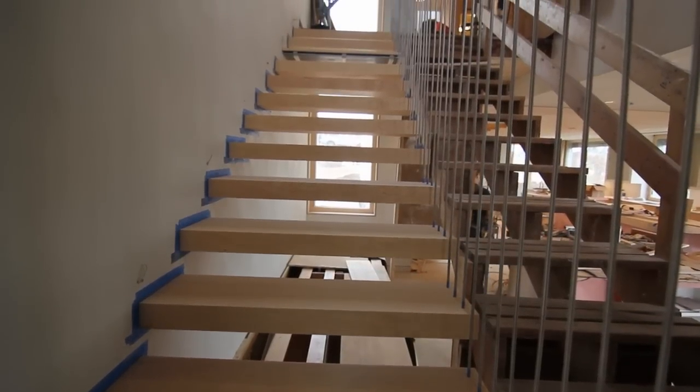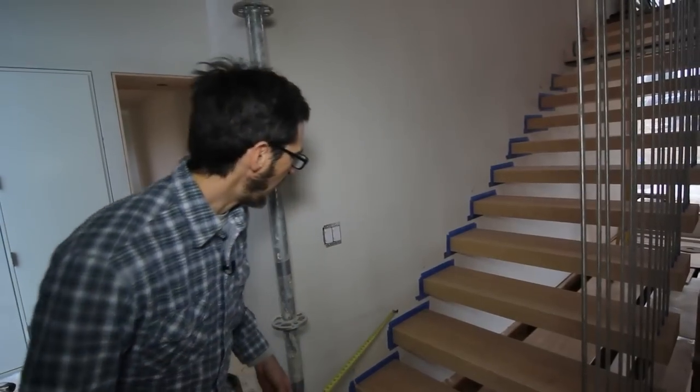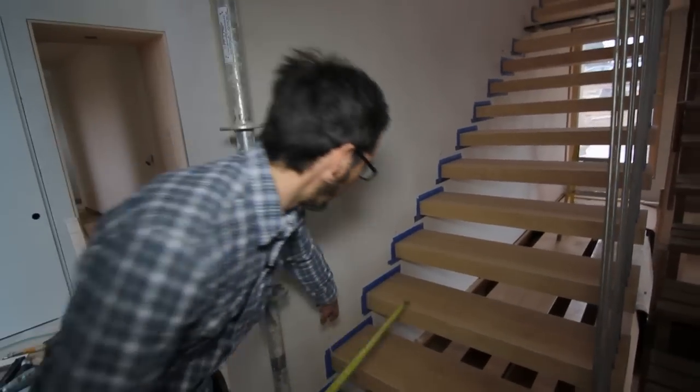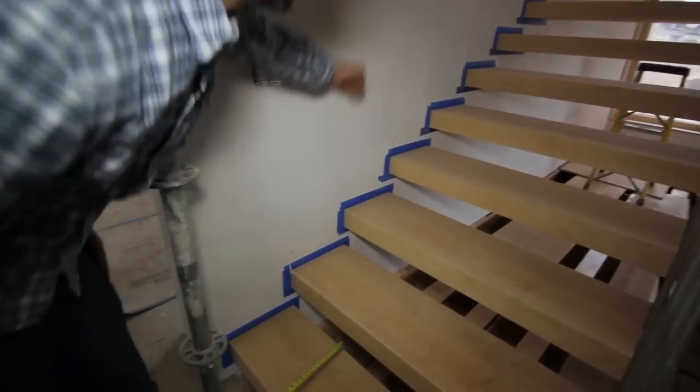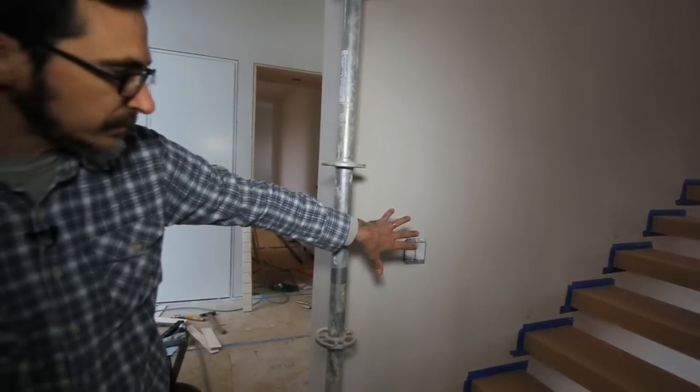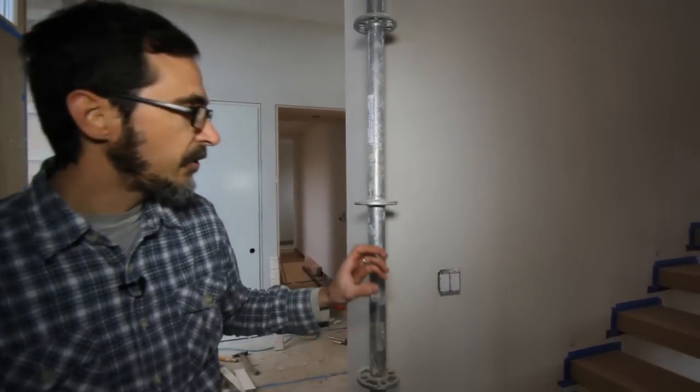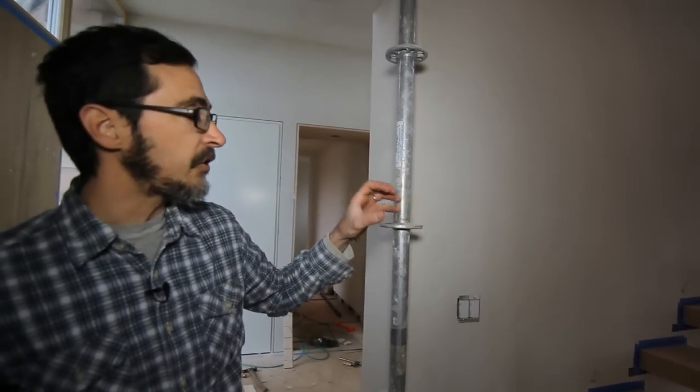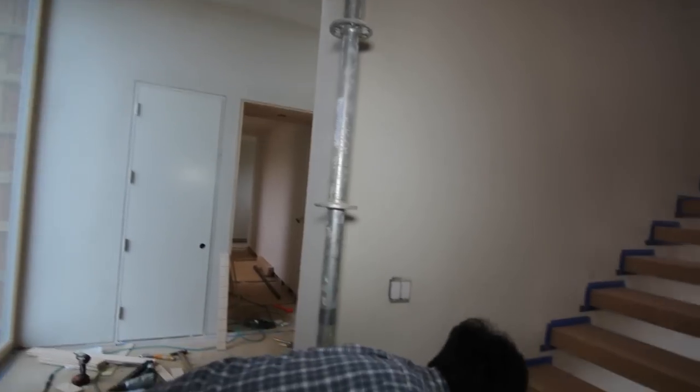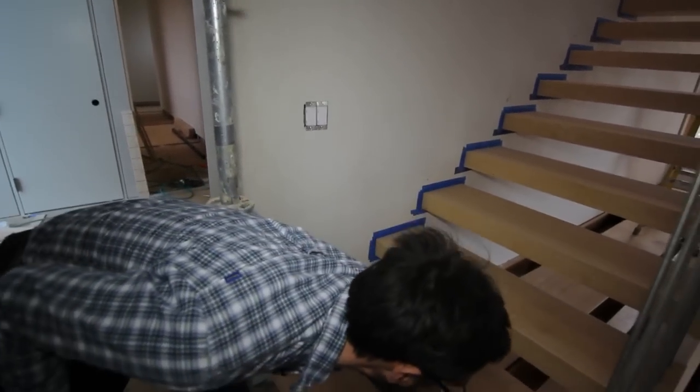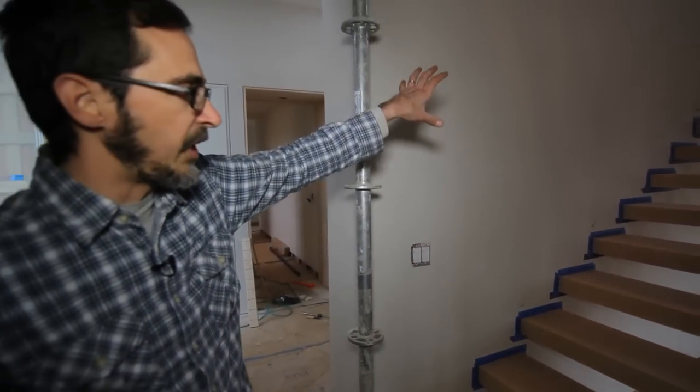It begins with an LVL stringer that's let into the wall. It's a 20-inch stringer that's let into this wall when we framed it. The second part is a steel fabrication of a plate and a tread that comes all the way across. Those get installed in the framing stage.